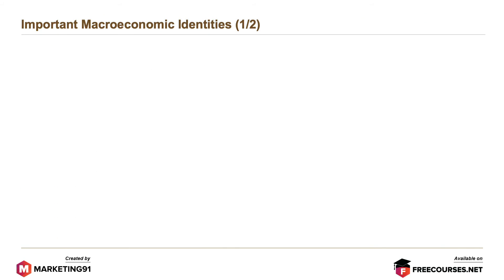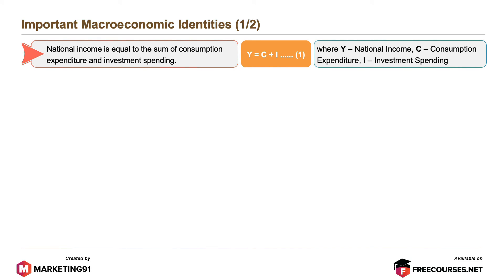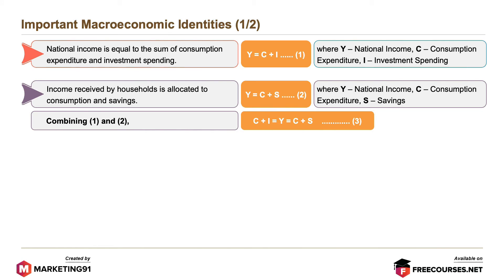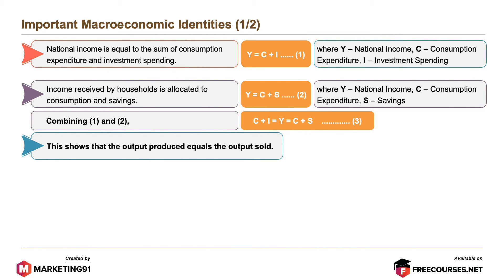Moving on, let's understand some important macroeconomic identities. National income is equal to the sum of consumption expenditure and investment spending, expressed as Y = C + I, where Y is national income, C is consumption expenditure, and I is investment spending. Income received by households is allocated to consumption and savings, expressed as Y = C + S, where S denotes savings. Combining these equations, we get C + I = Y = C + S, which shows that the output produced equals the output sold.